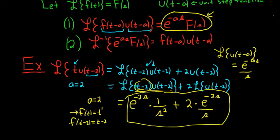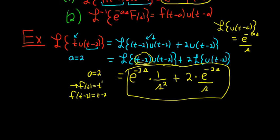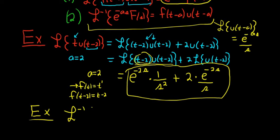It takes a little bit of careful finesse, so go slow when you're first learning to use this one. It's a little more difficult than the first translation theorem. Now let's do an example going backwards using the inverse formula. We'll try the inverse Laplace of e to the negative π·s over s squared plus 1.